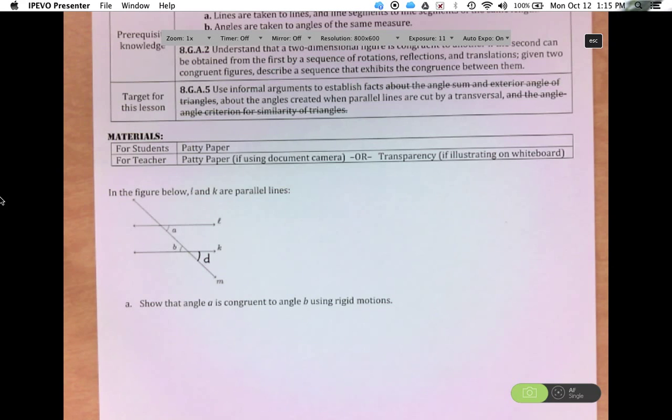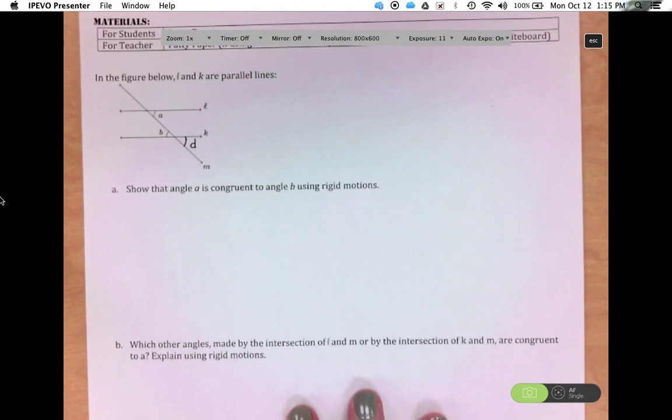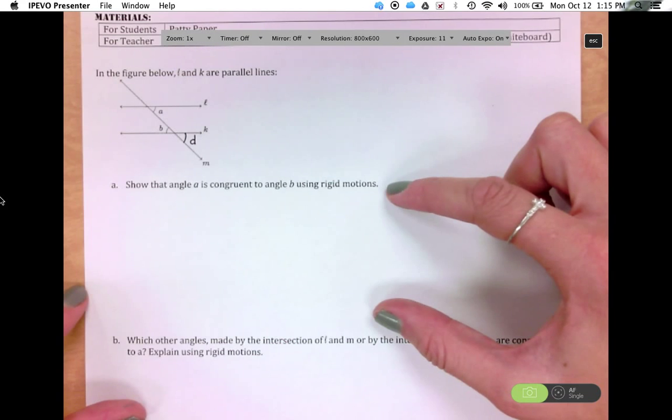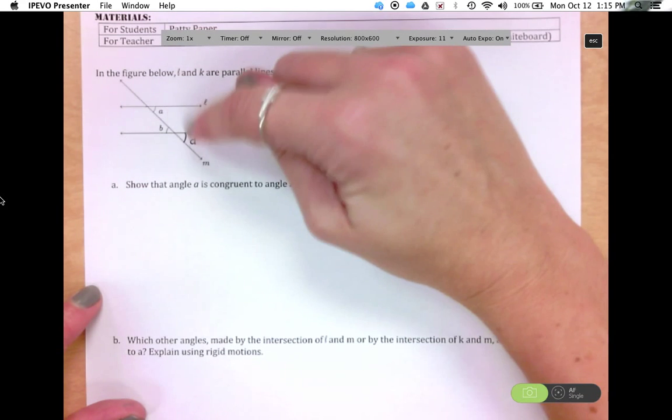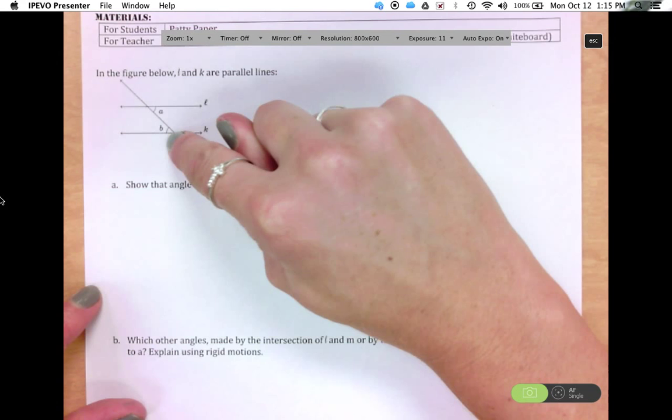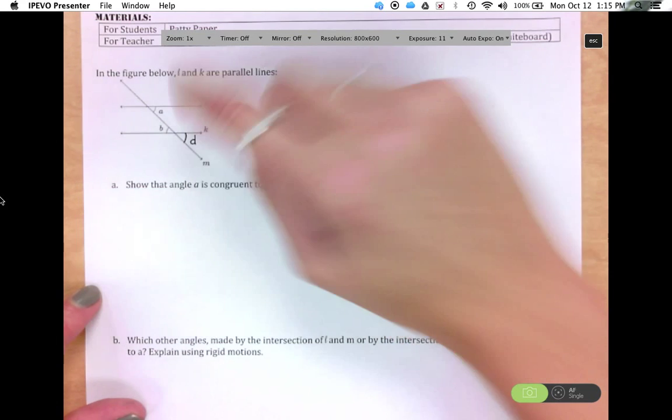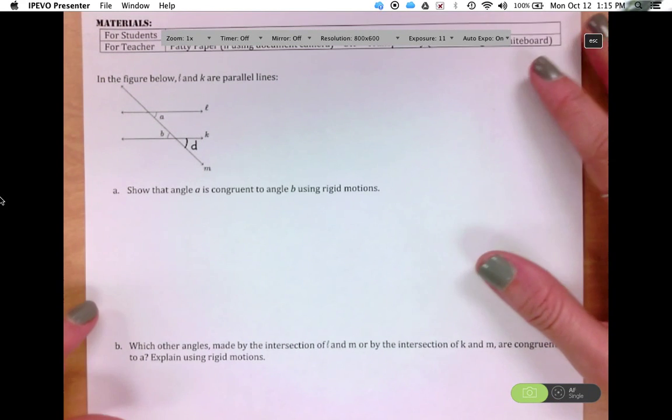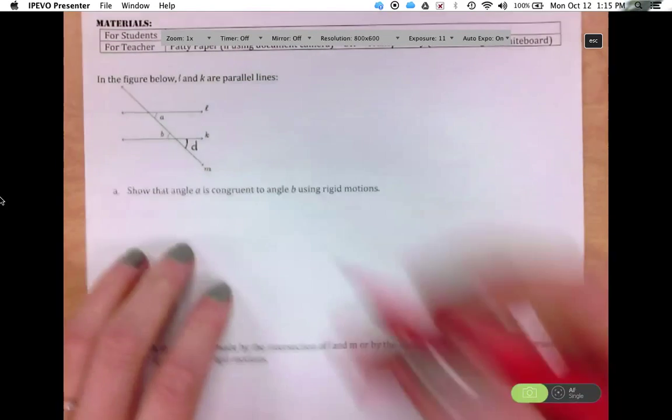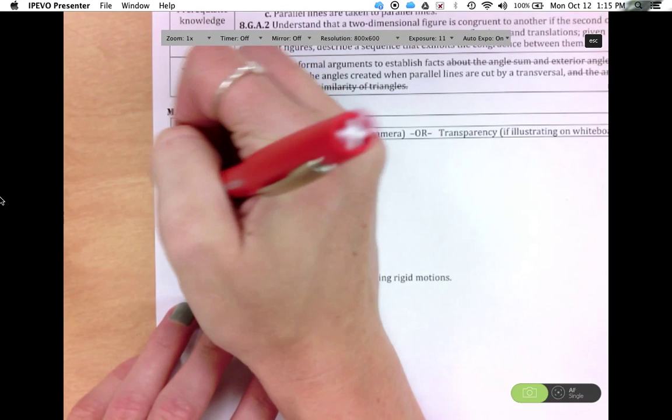So now part B is asking which other angles made by the intersection of L and M, or by the intersection of K and M, are congruent to A. So in this part A, we found that angle A was congruent to angle D. Angle A was also congruent to angle B. So the last one that we would want to explore is that A is congruent to this angle up here. Let's call it C.